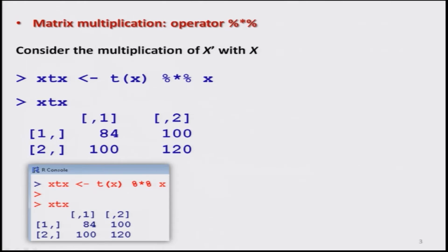First we consider how to do the multiplication of two matrices. The operator for matrix multiplication is this: a percentage sign, then multiplication sign, then percentage sign — so the multiplication sign is enclosed inside two percentage signs. This indicates matrix multiplication. If you do not use the percentage signs, then it means this is a simple scalar multiplication of the matrix.